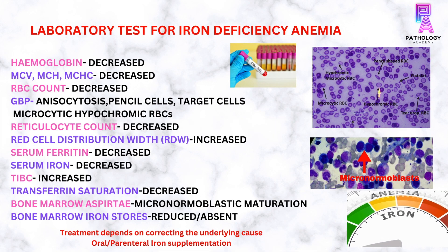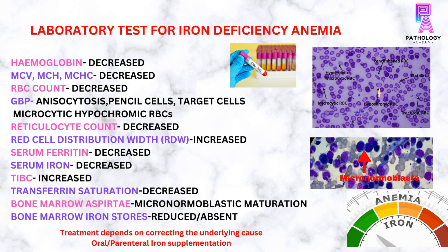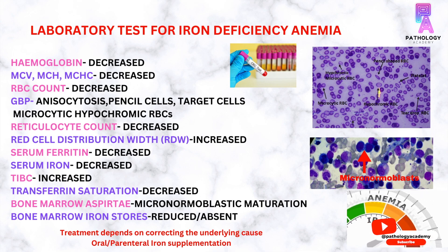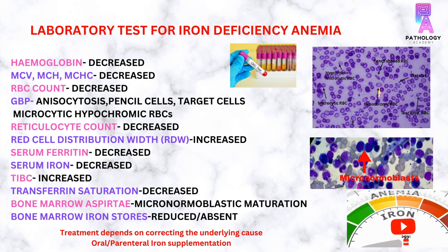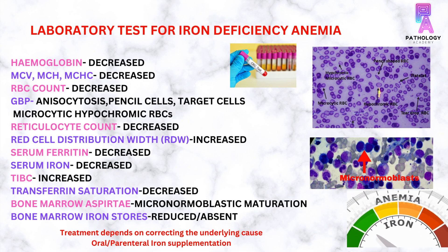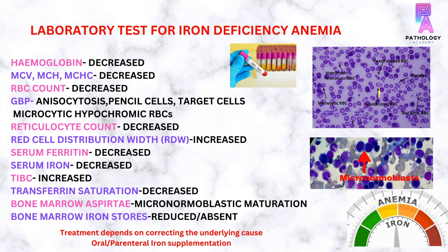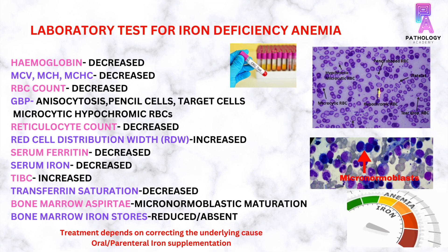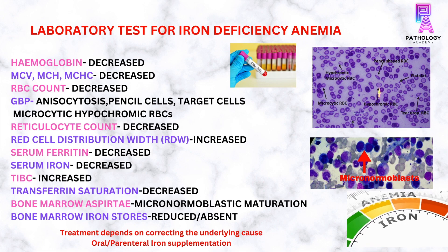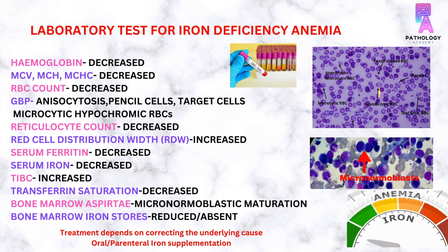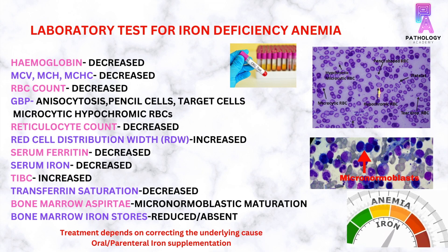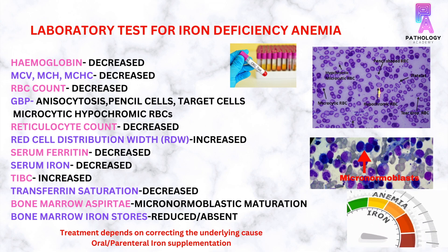The laboratory findings of iron deficiency anemia include a reduction in hemoglobin, decreased MCV or mean corpuscular volume, decreased MCH or mean corpuscular hemoglobin, and reduced MCHC or mean corpuscular hemoglobin concentration. Also, the red cell distribution width is increased, and the reticulocyte count is decreased.